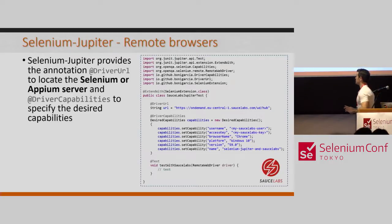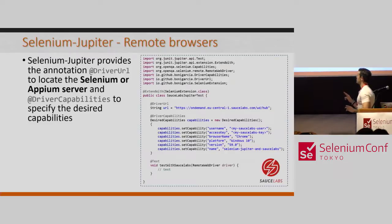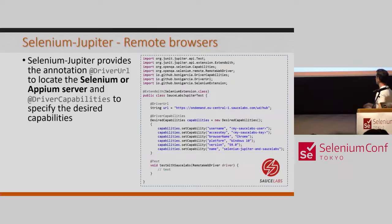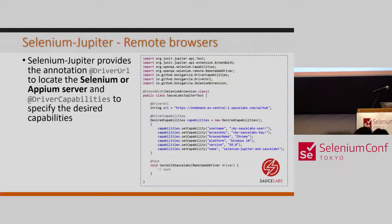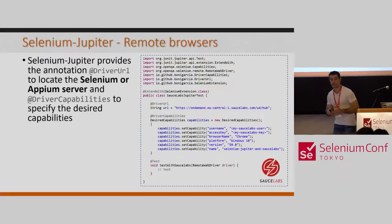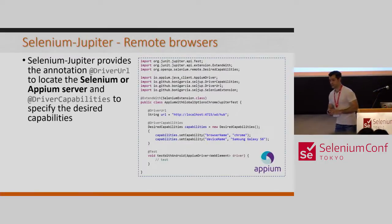We can also use Selenium Jupiter to run remote browsers. Selenium Jupiter provides two annotations: @DriverUrl and @DriverCapabilities. These annotations can be used at the parameter level or class level. In this example, I use the driver URL for SauceLabs and a given set of capabilities to use Chrome at a given SauceLabs URL. For Appium, it's similar — in this case it's an Appium server running on localhost.